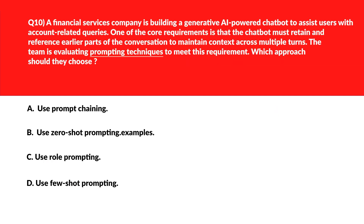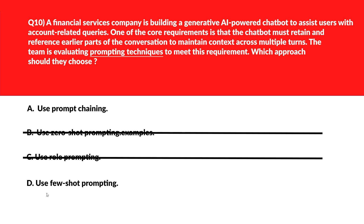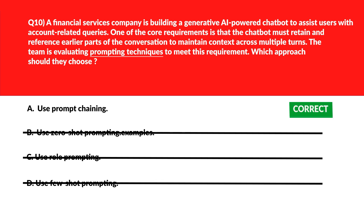Now let's evaluate prompt techniques to meet the requirement. Option A says use prompt chaining — this enables context retention across user exchanges, let's keep it. Option B says use zero-shot prompting — this limits contextual continuity and reference capability — incorrect. Option C says use role prompting — this doesn't address multi-turn memory or context tracking — wrong answer. Option D says use few-shot prompting — this guides tone but doesn't preserve prior conversational context. We'll lock option A, use prompt chaining, as the right answer.